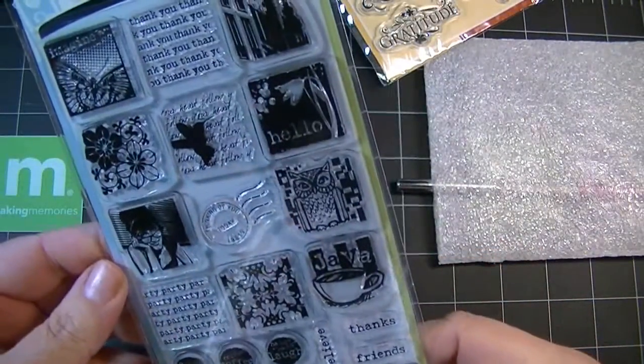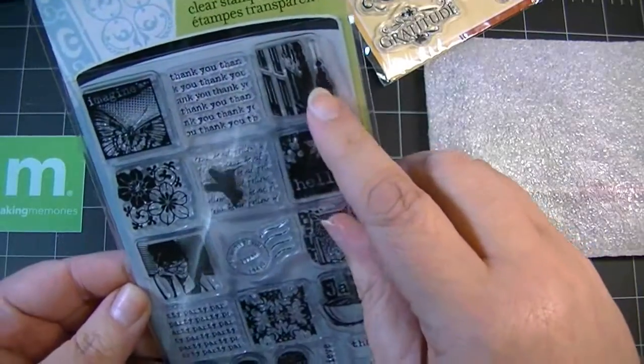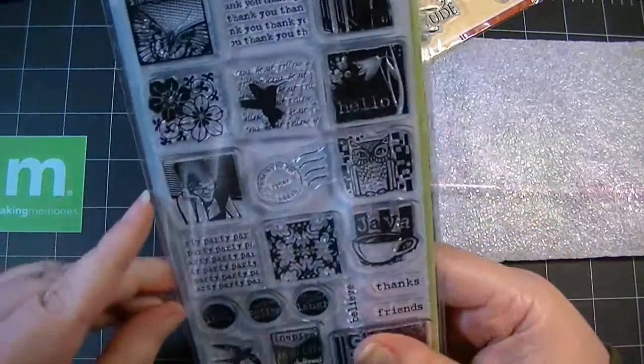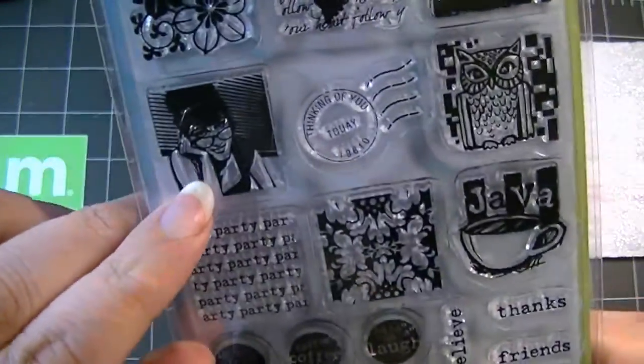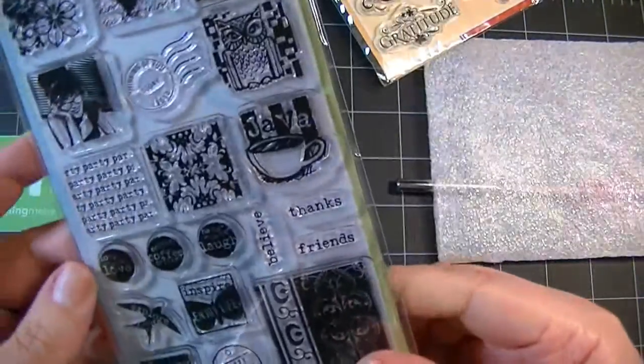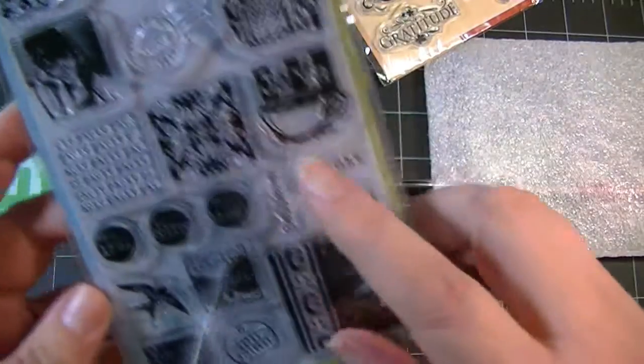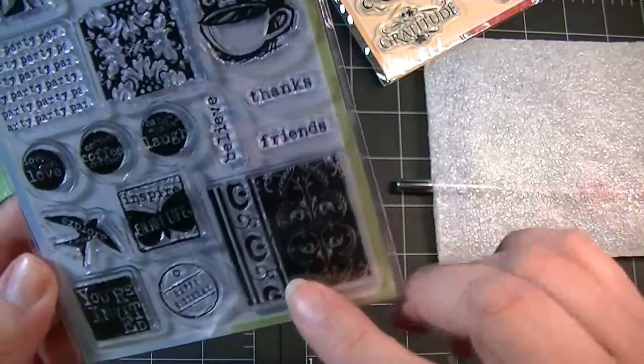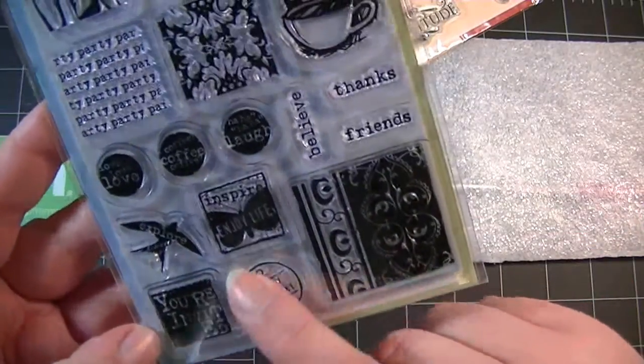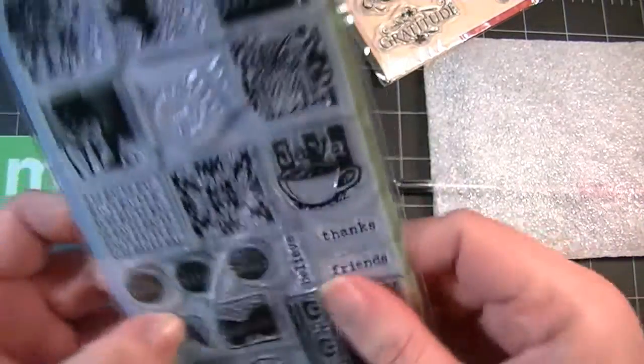These are really cute images - looks like a side of a building, really pretty flowers, a girl with an updo and old-fashioned cat eyeglasses, Java, a Damask background. Then there's 'Thanks friend,' 'Believe,' 'Happy birthday,' 'You're invited,' 'Inspire.'